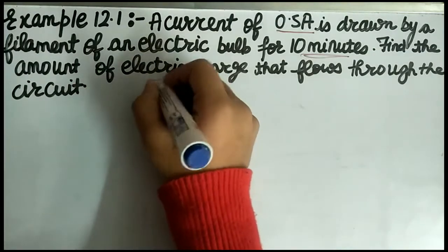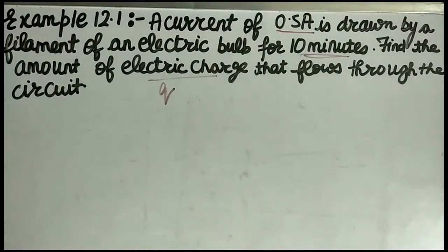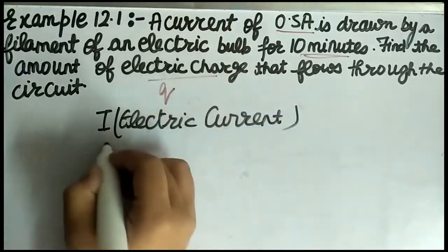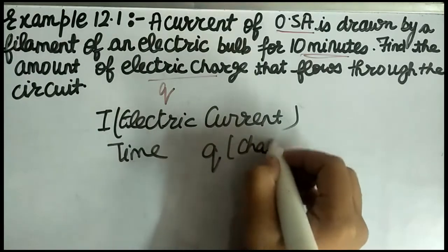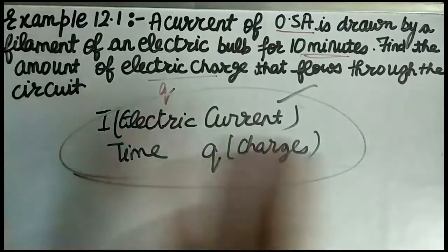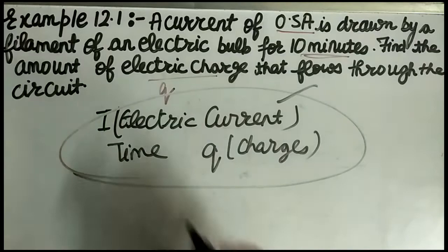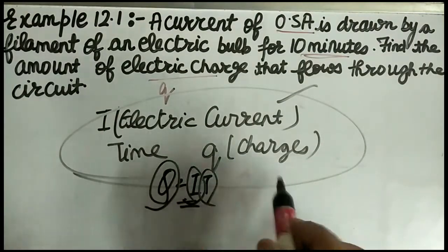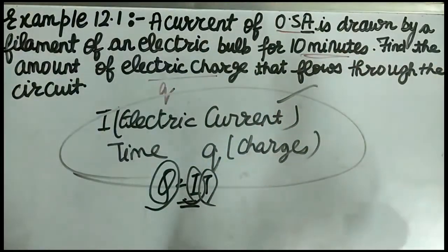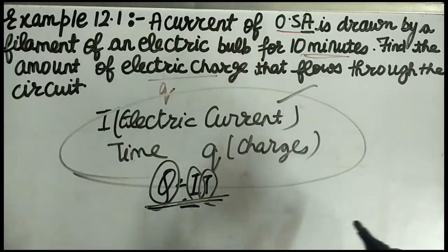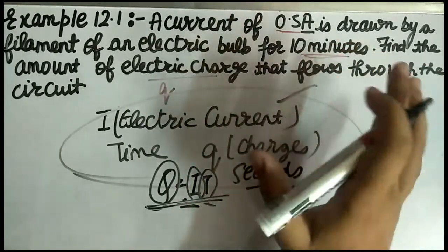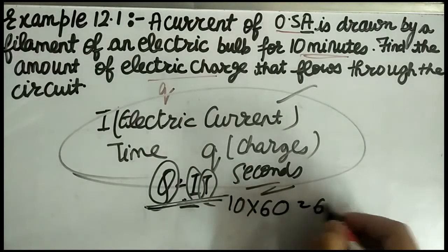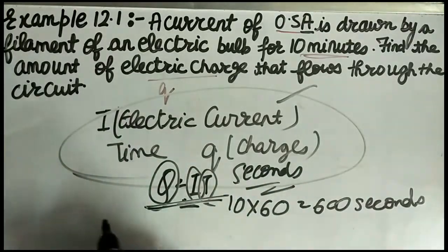We have given electric current I, and time T. We need to find charge Q. The relation is Q = I × T. Now, time must be in seconds but we have minutes, so first we convert: 10 minutes = 10 × 60 = 600 seconds.